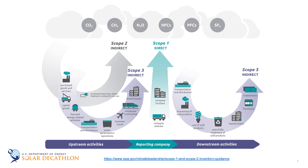It's easiest to think of Scope 1, 2, and 3 emissions in the context of a business — in other words, related to commercial buildings. However, we can also apply the same definitions and concepts to residential buildings. Homeowners have Scope 1, 2, and 3 emissions also. We have Scope 1 emissions from our fossil fuel powered furnaces, water heaters, and vehicles. We have Scope 2 emissions from the energy we purchase from our utility in order to power our homes. And finally, we have Scope 3 emissions from all the products and services we purchase, the waste we produce, and lots more.